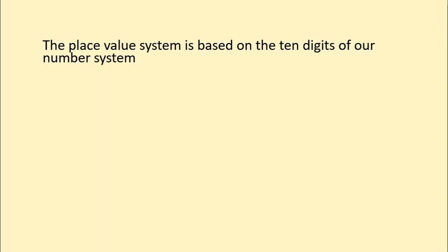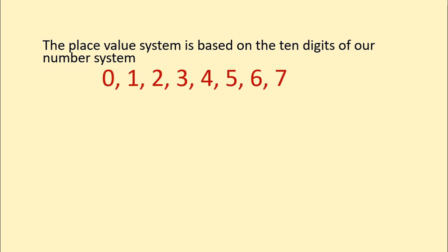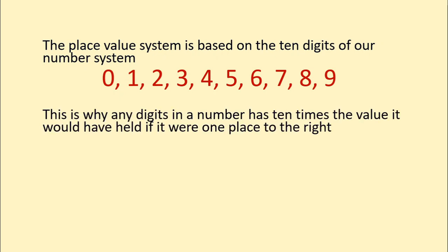The place value system is based on the 10 digits of our number system: 0, 1, 2, 3, 4, 5, 6, 7, 8, 9. Including 0, that is 10 digits. This is why any digit in a number has 10 times the value it would have had if it were one place to the right. Let me show you an example to clarify that for you.